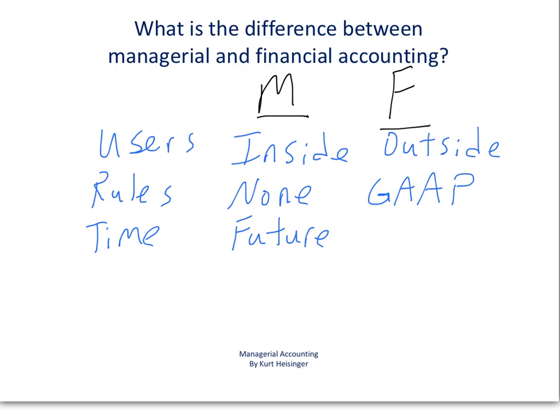For Financial Accounting, we tend to be looking at historical information — that is, transactions that have already occurred. We prepare that information, summarize it, and present it in the form of financial statements.